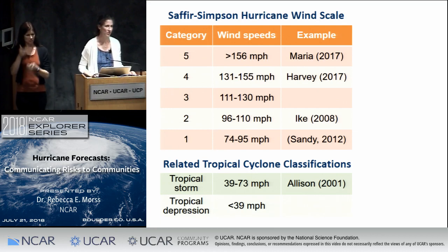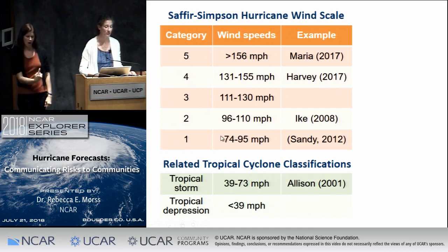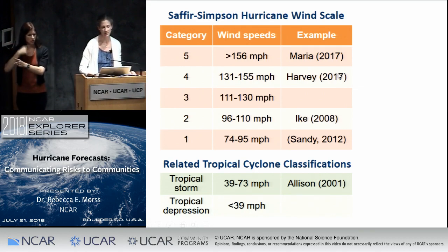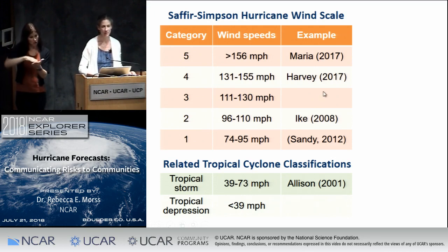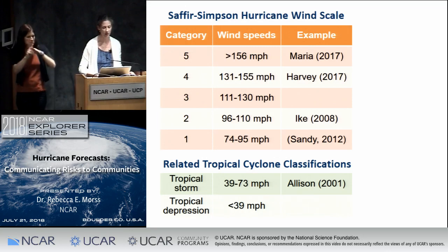This shows the Saffir-Simpson hurricane wind scale, which represents different types of hurricanes. On the left you can see the category of hurricanes one through five, where five is the strongest and one is a relatively weak hurricane in terms of wind speeds. On the right I've put some example hurricanes you may have heard of to give a reference point of how strong these hurricanes were at landfall. You don't have to feel like you have to remember these — I'm just giving you an idea in case some of them you know or want to look up later.